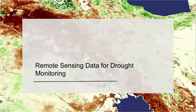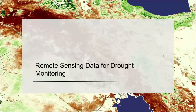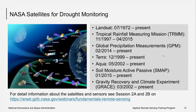In this webinar, we're going to look at remote sensing data which help in monitoring droughts. All three types of droughts — meteorological, agricultural, and hydrological — can be monitored by using remote sensing data directly or data derived from remote sensing. We're going to review some of those data sets and see how they help in monitoring droughts. To start with, here is a list of NASA satellites which are useful for drought monitoring.